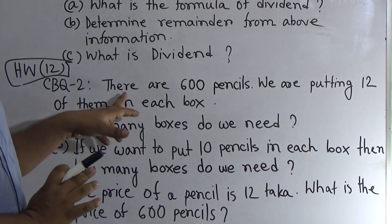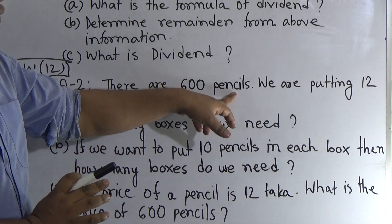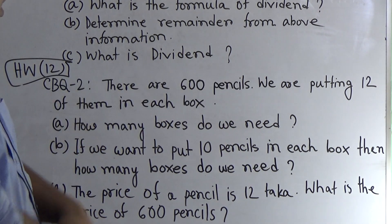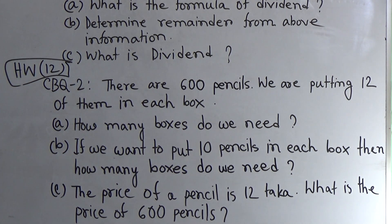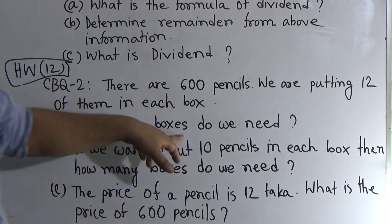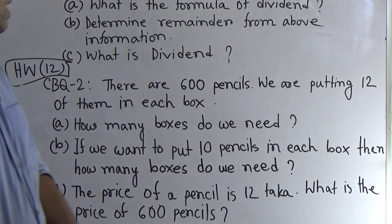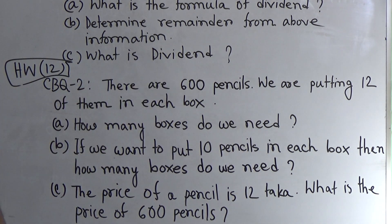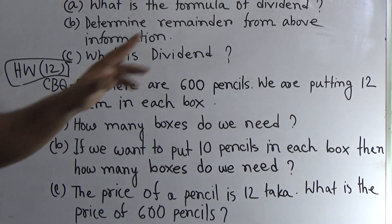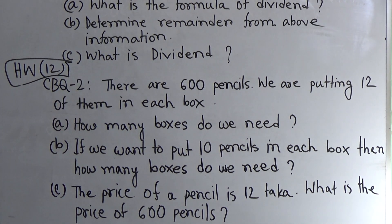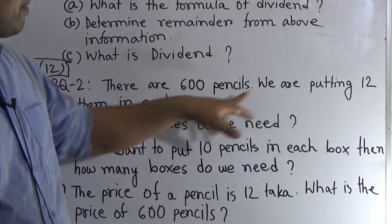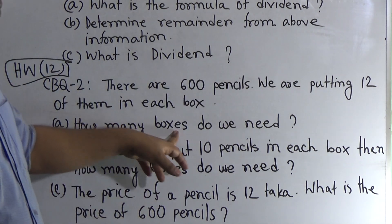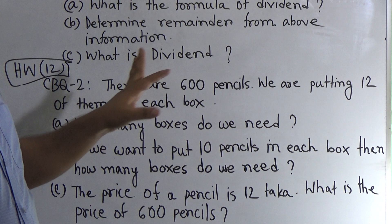We read the question for CBQ 2. There are 600 pencils. We are putting 12 of them in each box. Part A: How many boxes do we need? That means 12 pencils are put in one box, so 600 pencils are put in how many boxes? We divide 600 by 12 and we get the required number of boxes.